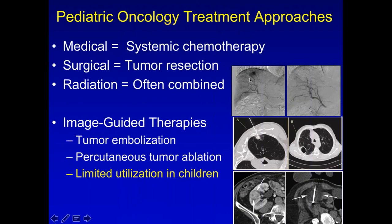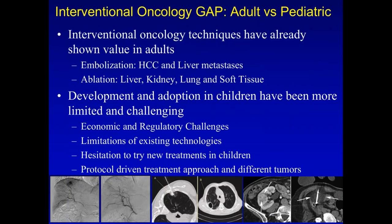Searching PubMed yields only about 13 or 14 papers on embolization in pediatrics, about half of which are review articles and the other half case series of 2 to 15 cases — not a real worldwide experience. Similarly, radiofrequency ablation in the lung or cryoablation in the kidney have much more defined roles in the adult world. Utilization in children is very limited due to economic and regulatory challenges — device companies don't want to invest in a relatively small pediatric market, FDA approval is a long expensive process — and there is a general hesitation to try newer things first in children. Additionally, the tumors are very different: no hepatocellular cancer, hepatoblastoma is rare, no metastatic colorectal cancer.